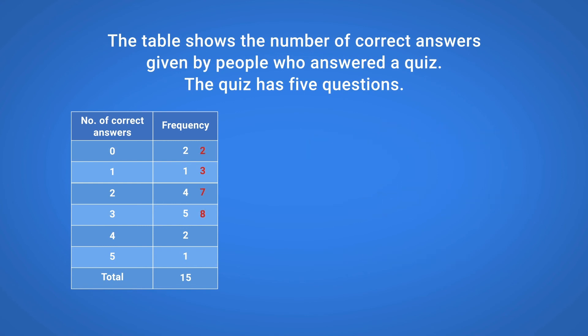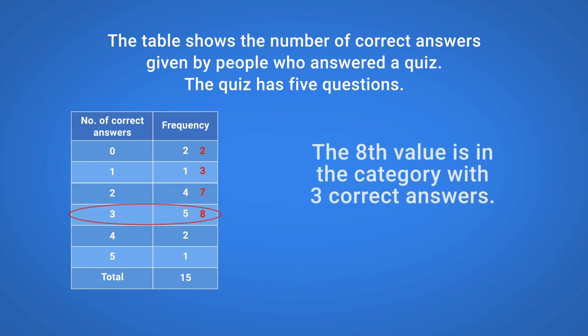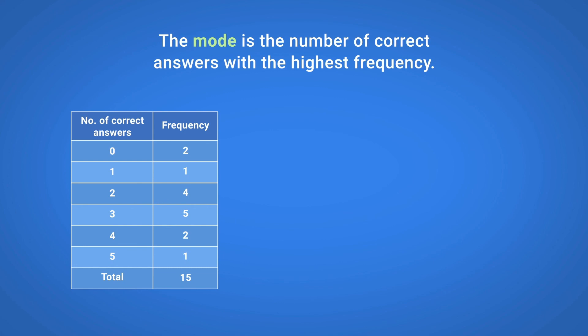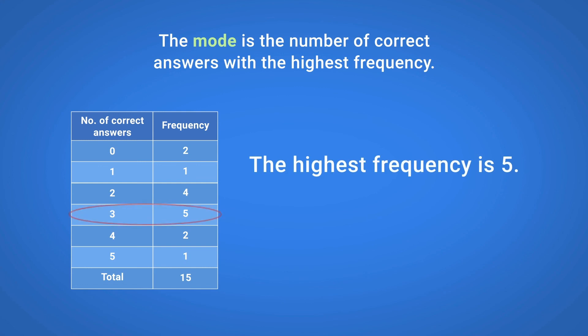Now we need to find the eighth value in the frequency table. The eighth value is in the category with three correct answers, so the Median is 3. The Mode is the number of correct answers with the highest frequency. Looking at the frequency table, we can see that the highest frequency is 5, so the Mode is 3.